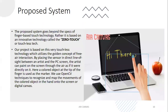The proposed system goes beyond the specs of finger-based touch technology. Rather, it is based on an innovative technology called zero touch or touchless technology. Our project is based on this touchless technology, which utilizes the concept of free AIR interaction. By placing the sensor in direct line of sight between an artist and the PC screen, the artist can paint on the screen through the air as if it were directly on it. A colored object at the tip of the finger is used as the marker, and we use OpenCV techniques to recognize and map the movements of the colored object onto the screen. The sensors used, since we are using a PC screen, are simply image sensors.